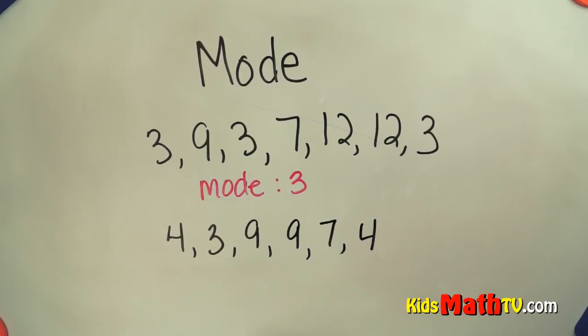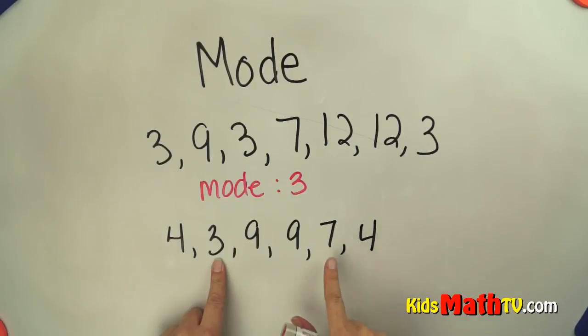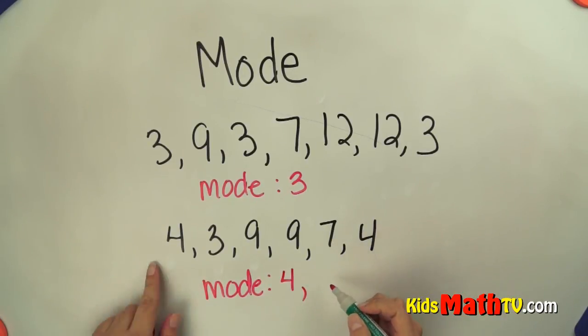In this case I see there are two fours, one three, one seven, and two nines. In this case there's actually more than one mode. You actually have two modes because two numbers happen twice. So the mode here is four and nine. You have two modes in that.